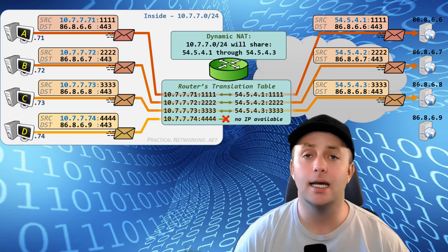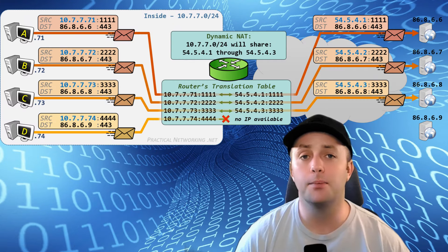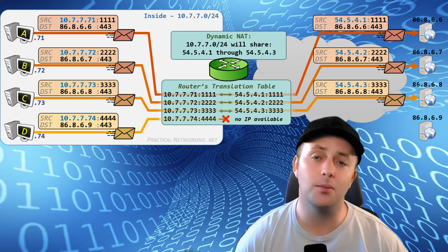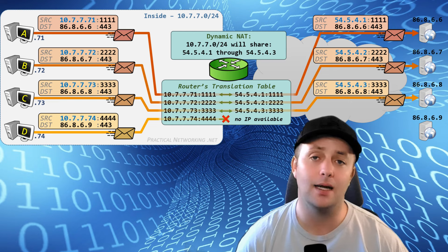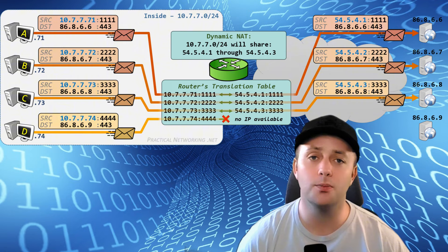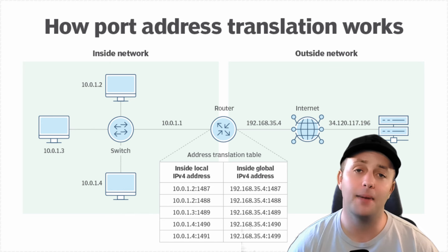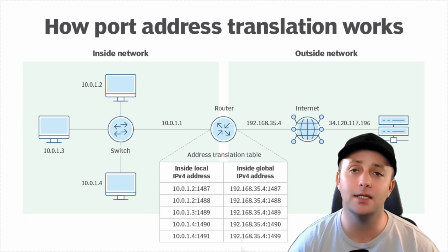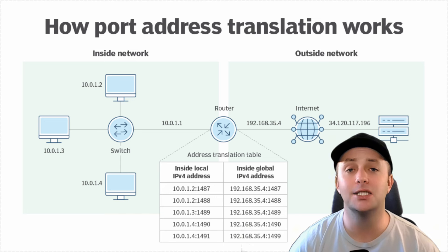Next is dynamic NAT. In dynamic NAT, the router uses a pool of public IP addresses. When a device on the local network needs to communicate with the internet, the router temporarily assigns one of the available public IP addresses from the pool. Once the communication is finished, the public IP address is returned to the pool and can be used by another device. Finally, there's Port Address Translation, or PAT, which we mentioned earlier. PAT allows multiple devices to share the same public IP address by assigning different port numbers to each connection.